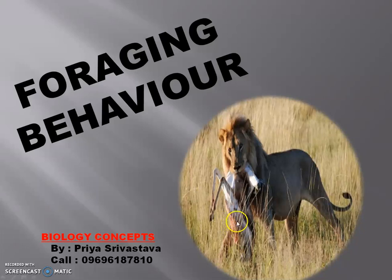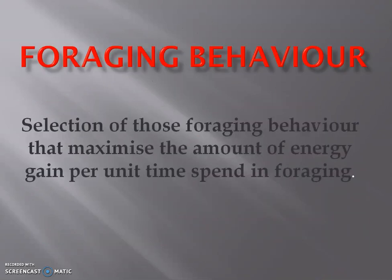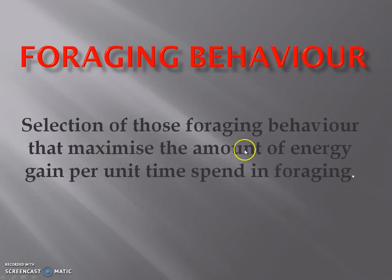We are discussing module three, which is evolution. Today we are going to discuss the behavior part, specifically foraging behavior. Foraging behavior is basically the process of intake of food materials. The selection of foraging behaviors maximizes the amount of energy gain per unit time spent in foraging — meaning energy gained must be maximum compared to the time and energy invested in foraging.